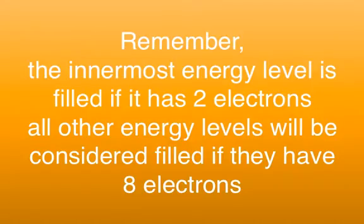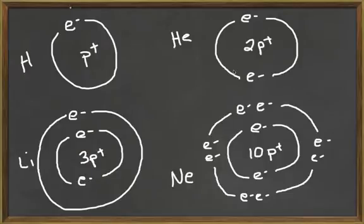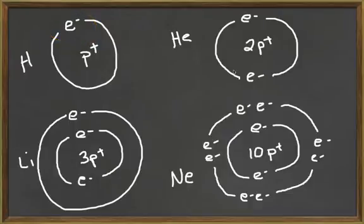The innermost energy level for atoms is filled if it has two electrons. The second energy level is filled if it has eight electrons, and the third energy level is also filled with eight electrons. Hydrogen only has one electron occupying its only energy level, so it will readily give this up. Lithium only has one electron in its outermost level, so it will also readily give up its electron to leave it with a filled outermost energy level.